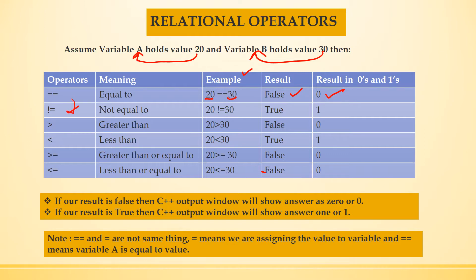Next is not equal to: 20 is not equal to 30, so the result is true and we will get 1 as the answer. Greater than: 20 is greater than 30 — that result is false and 0.